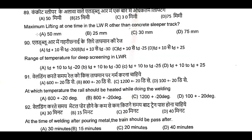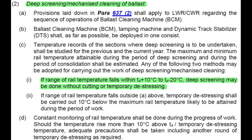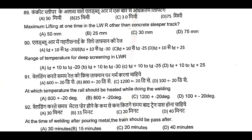Question Number 90: Range of temperature for deep sealing in LWR. For deep sealing of LWR, Td plus 10 to Td minus 20. Question Number 90, A is the correct answer: Td plus 10 to Td minus 20.